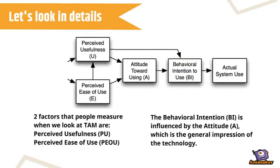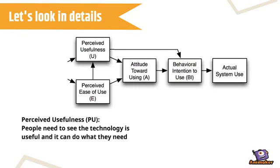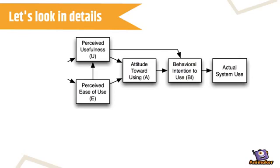The two factors that people measure when we look at TAM are perceived usefulness and perceived ease of use. Perceived usefulness: people need to see that the technology is useful and it can do what they need. Perceived ease of use: it has to look simple and people have to feel confident using it.